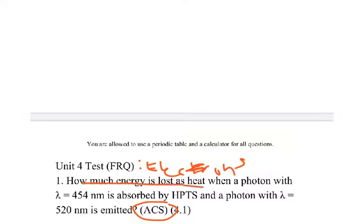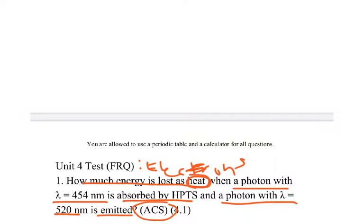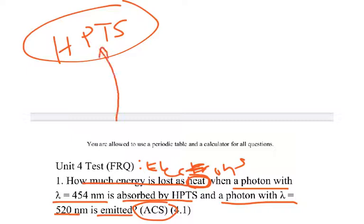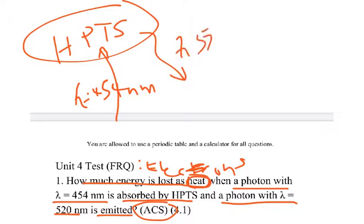How much energy is lost as heat when a photon with a wavelength of 454 nanometers is absorbed by HPTS and a photon with a wavelength of 520 nanometers is emitted? Notice how this question is oddly worded and there is something called heat that's being talked about. This substance called HPTS is absorbing a photon with a wavelength of 454 nanometers and emitting a photon with 520 nanometers.